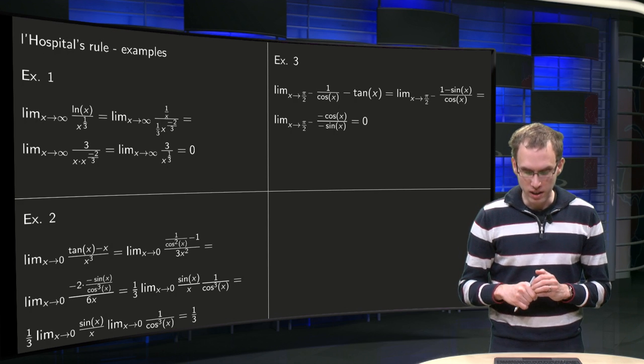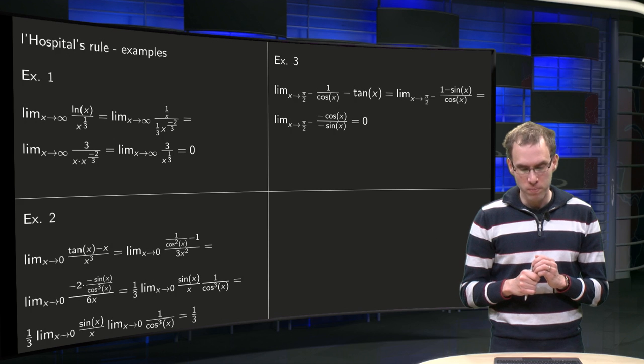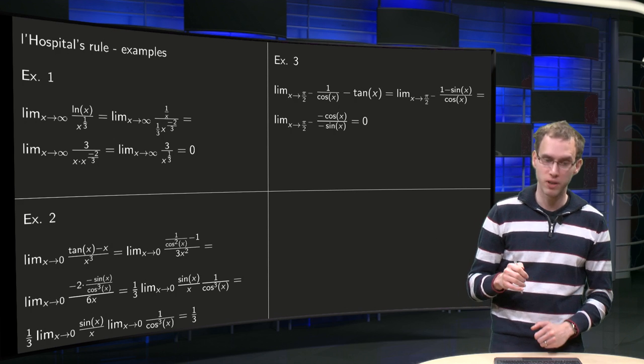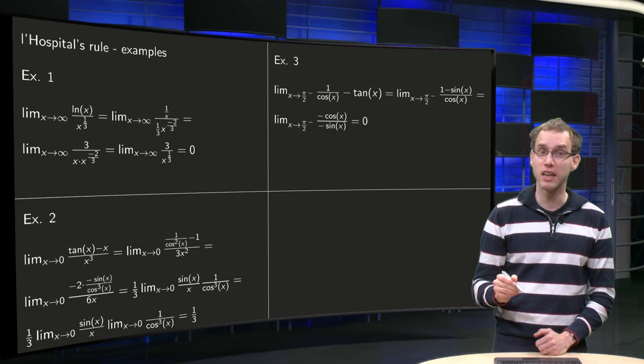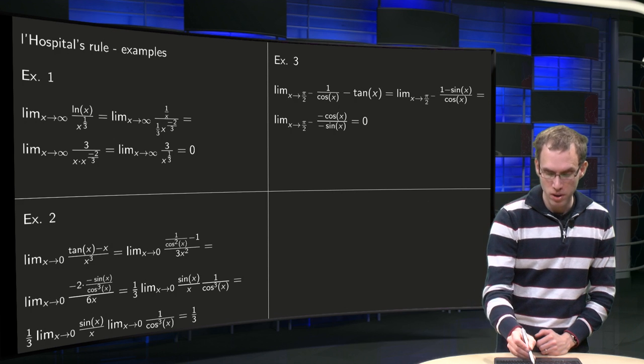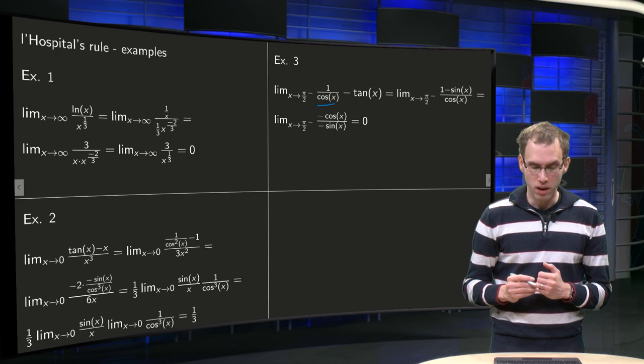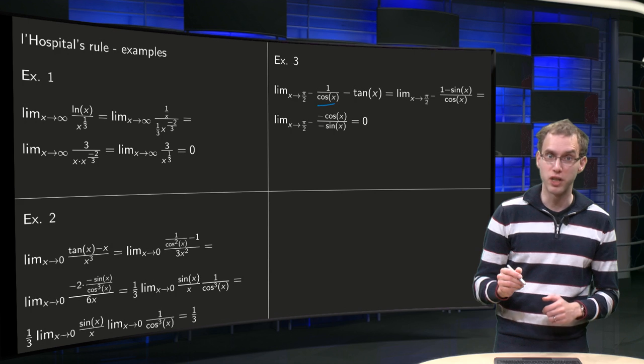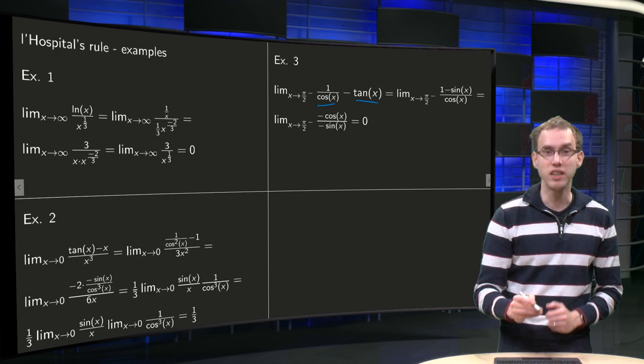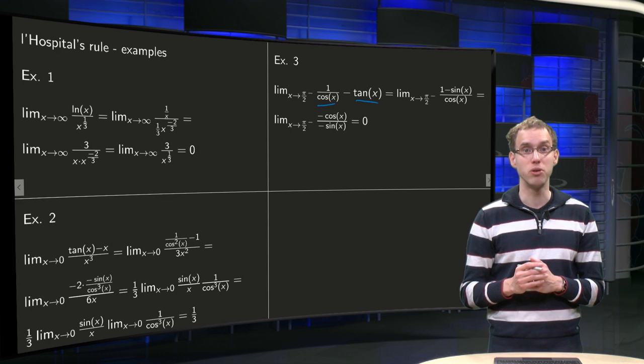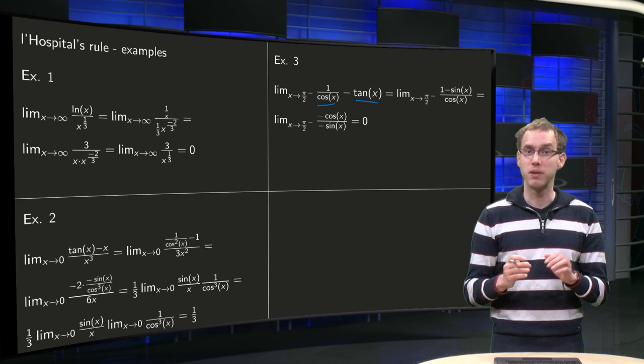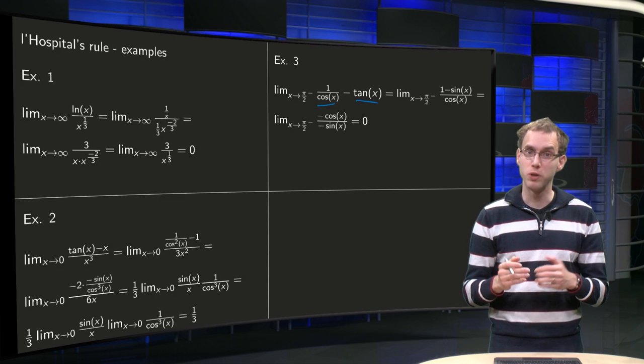Then we'll take infinity minus infinity, so we have to be a bit careful here, because if x goes to pi over 2, the cosine of x becomes 0, so we get 1 over 0 equals infinity, and the tangent of x equals sine of x over cosine of x also blows up. So we have to be a bit careful, because we get infinity minus infinity.